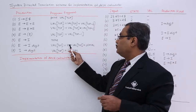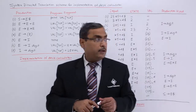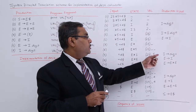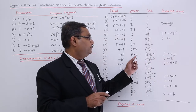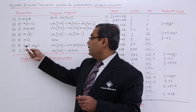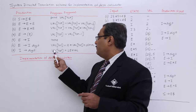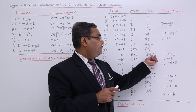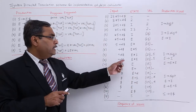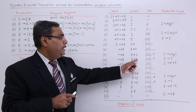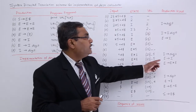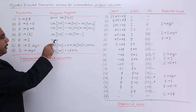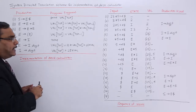Val[top] is equal to 10 star val[top] plus lex val — similarly this replacement takes place. Then I produces digit: val[top] is equal to lex val, so val[top] gets 5 in this way. Now I will be replaced by E because of the production rule E produces I, and since E produces I the semantic action is none — no semantic action has been applied.